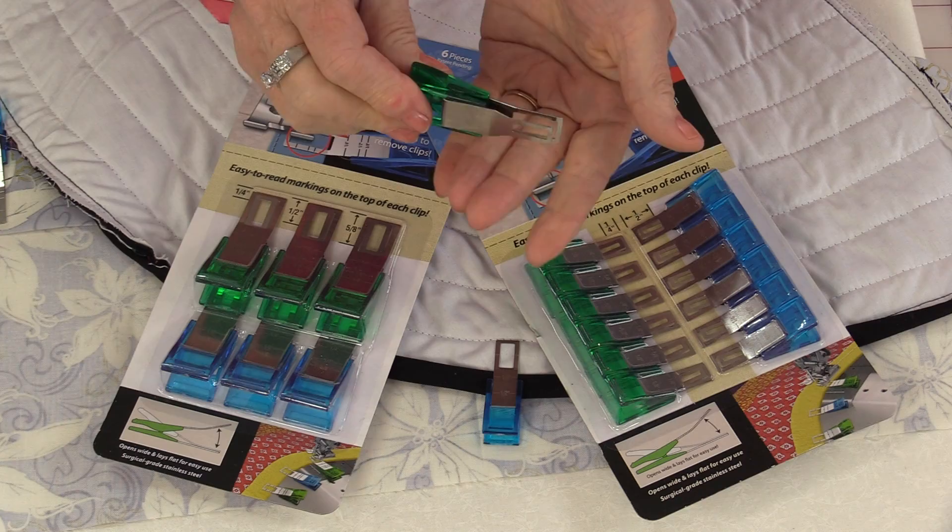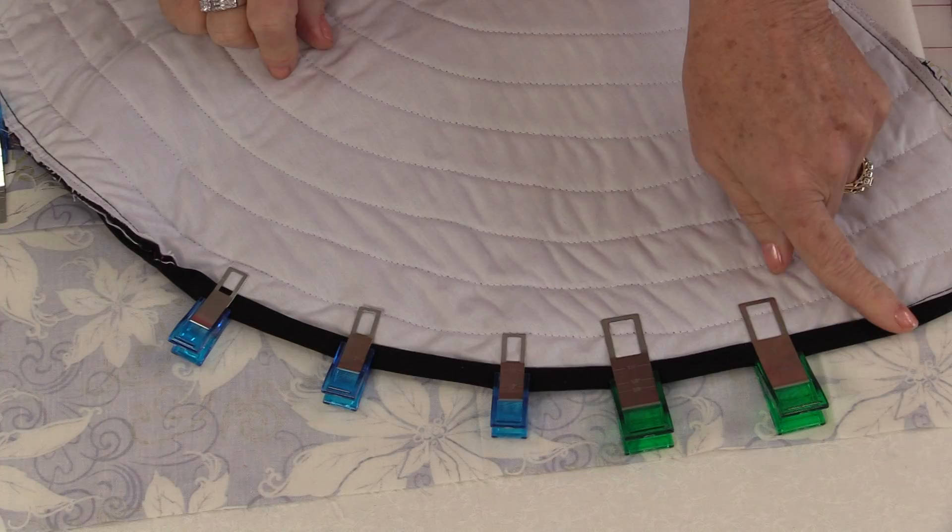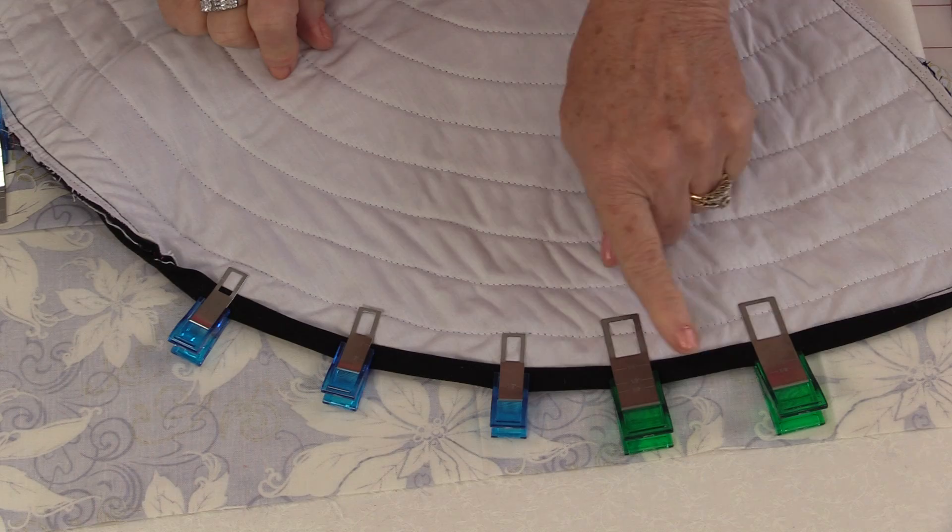Magic clips come in two different sizes. They're a sewing notion and they're just like the name says, they're little clips. As quilters we normally think to use these for binding. They're easy to clip on so that we can sew them.